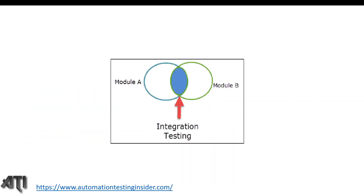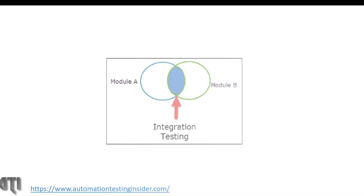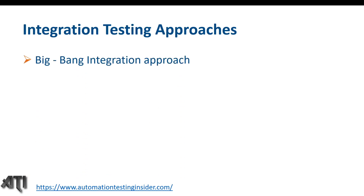In this diagram we have Module A and Module B, and the interface between them is where integration testing is performed — that is the common place where the two modules are integrated. In the case of the login page and home page, when we provide username and password and click submit, we land on the home page. And the home page depends on the login page — without providing credentials, we won't land on the home page. That is the integration between the login page and the home page.